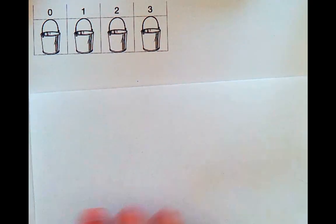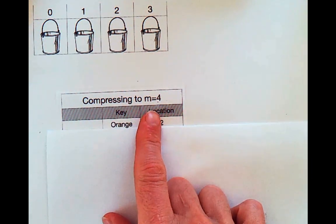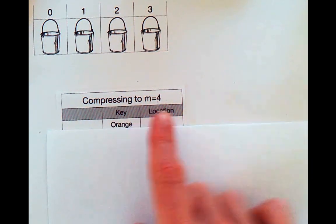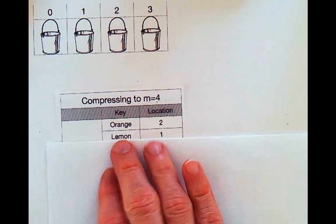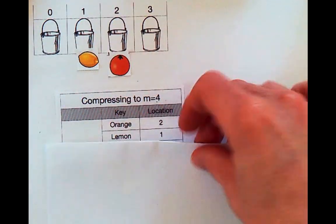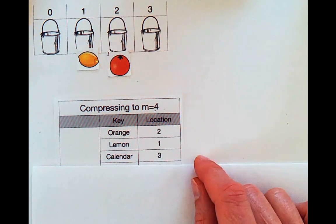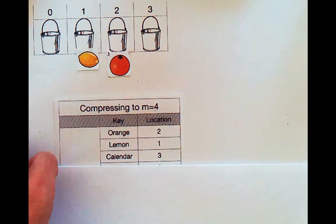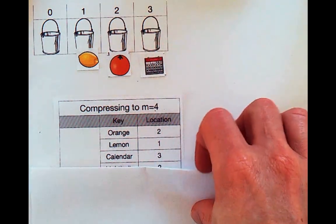We're back to our familiar four buckets, and we will go back to using a hash function with compression to four buckets. I'm going to go ahead and put orange in bucket two, lemon in bucket one. But this time we're applying rehashing, so we have to think about our load factor. So our load factor now is 0.5, 50%. We'll put the calendar in three. At this point we're at 75% load.